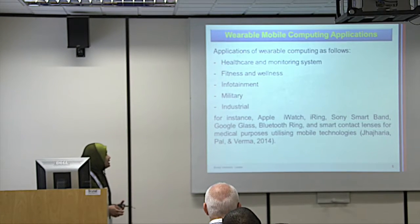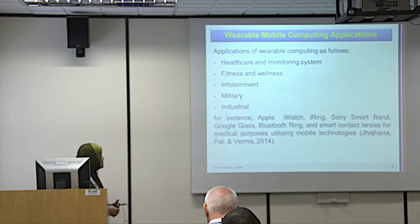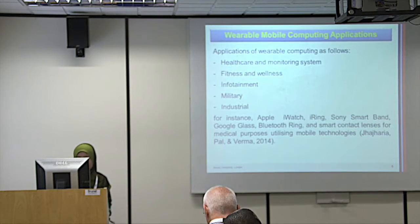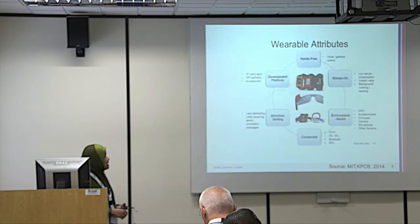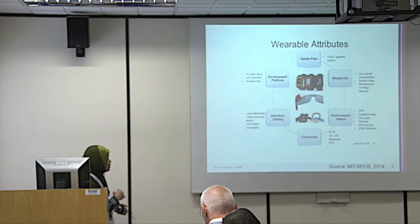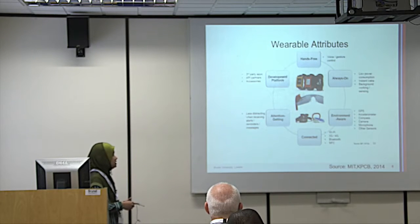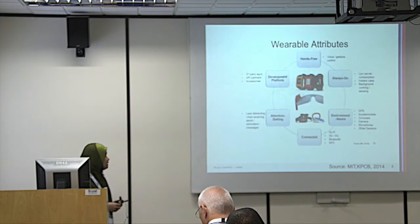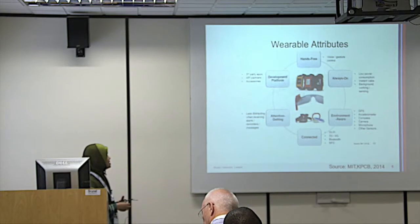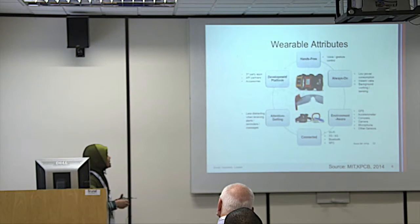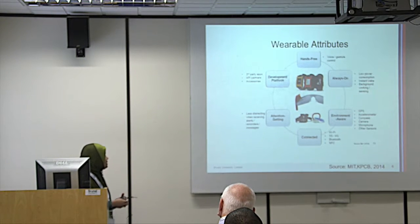Examples include Apple iWatch, iRing, Sony smartband, Google Glass, Bluetooth ring, and smart contact lens as wearable mobile technology. Key wearable attributes include: hands-free, always on, environment-aware, connected through Wi-Fi, 3G, 4G, Bluetooth or NFC, reduced distraction when receiving alerts or reminder messages, and development of the platform through third-party apps, API partners, and accessories.